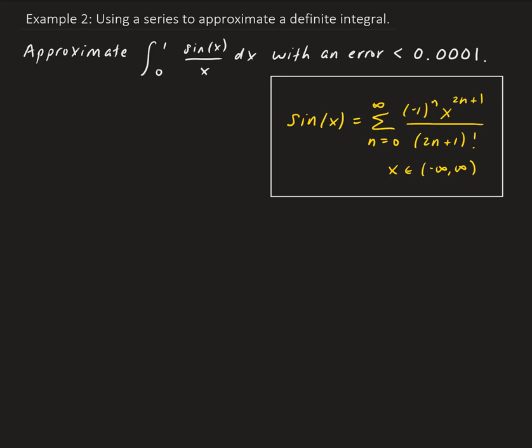In this example, we want to approximate the definite integral of sine x over x with an error less than 0.0001. In the box here, we have the power series for sine x, and this is valid for all x. So in our integral, we have sine x divided by x. What we can do is use the series.